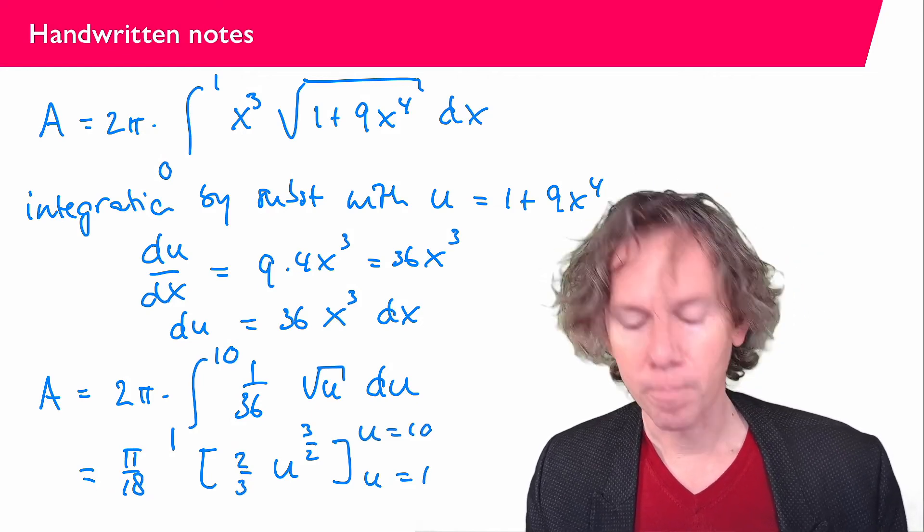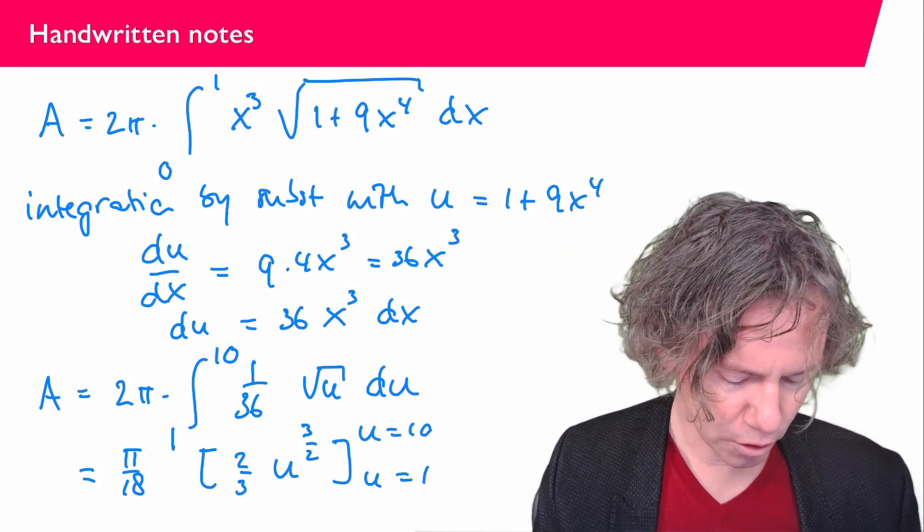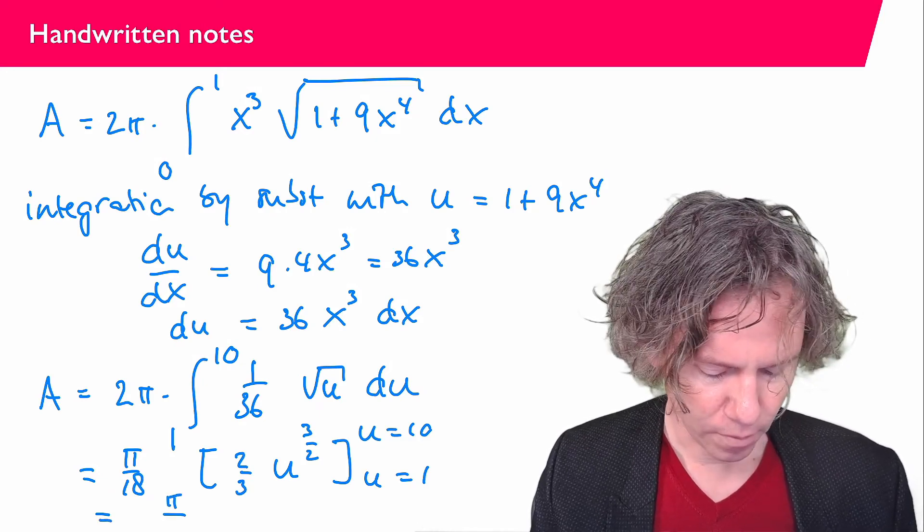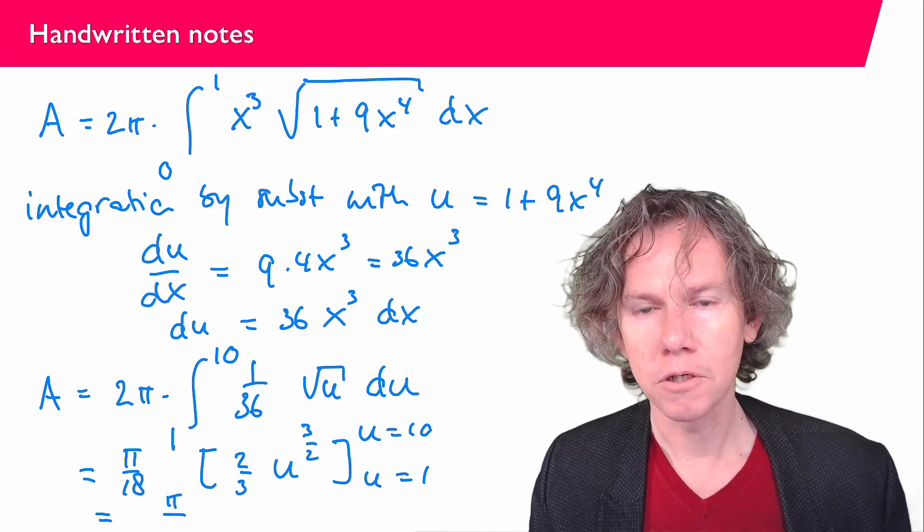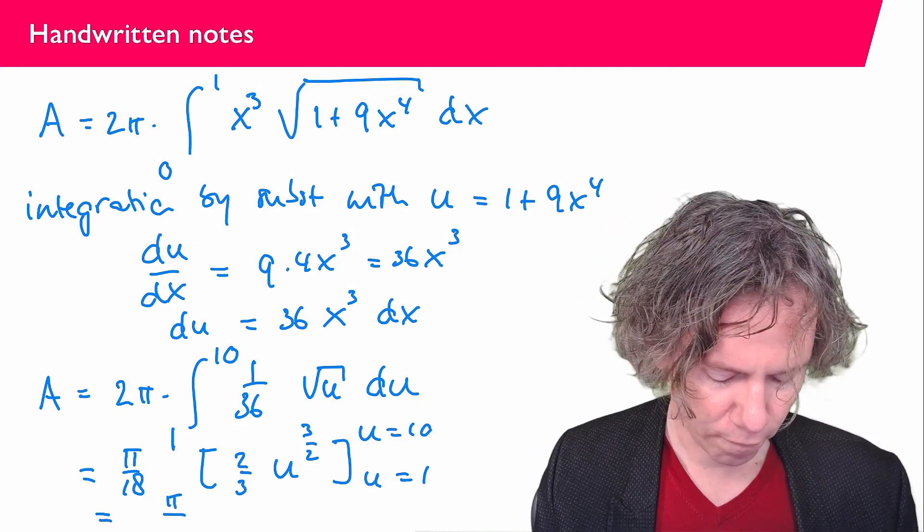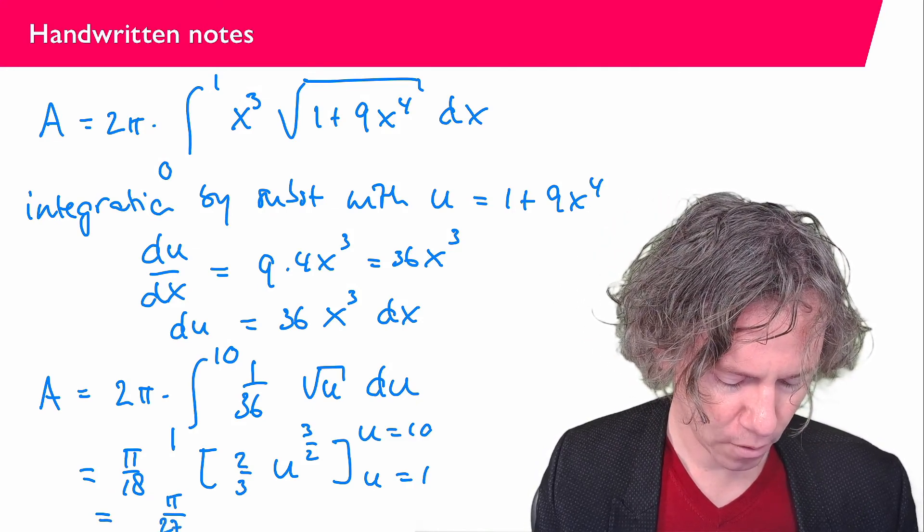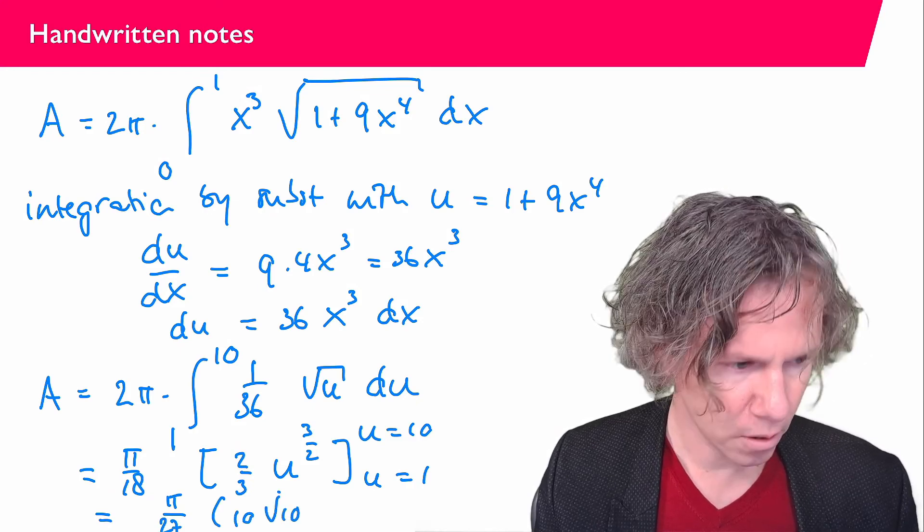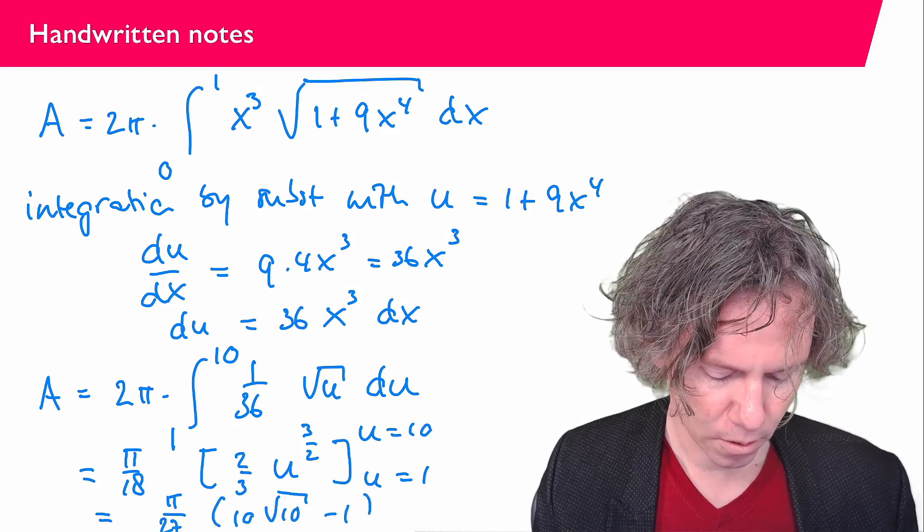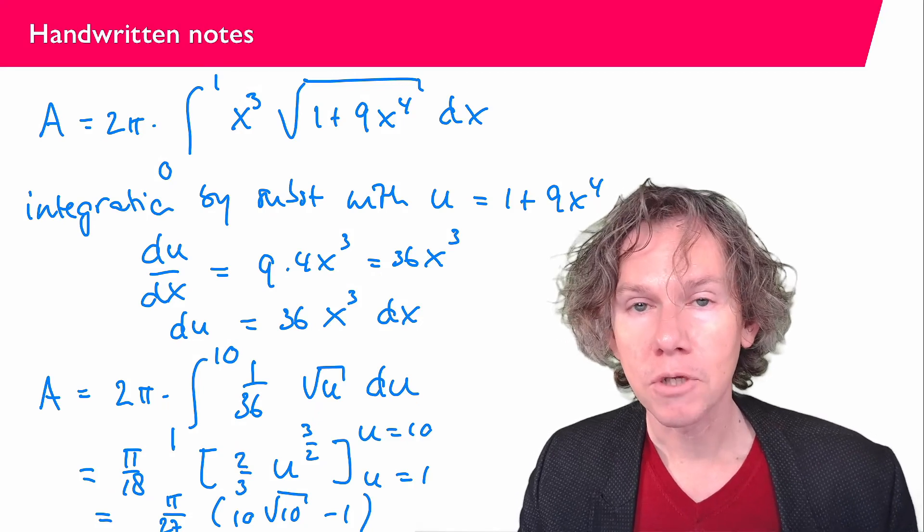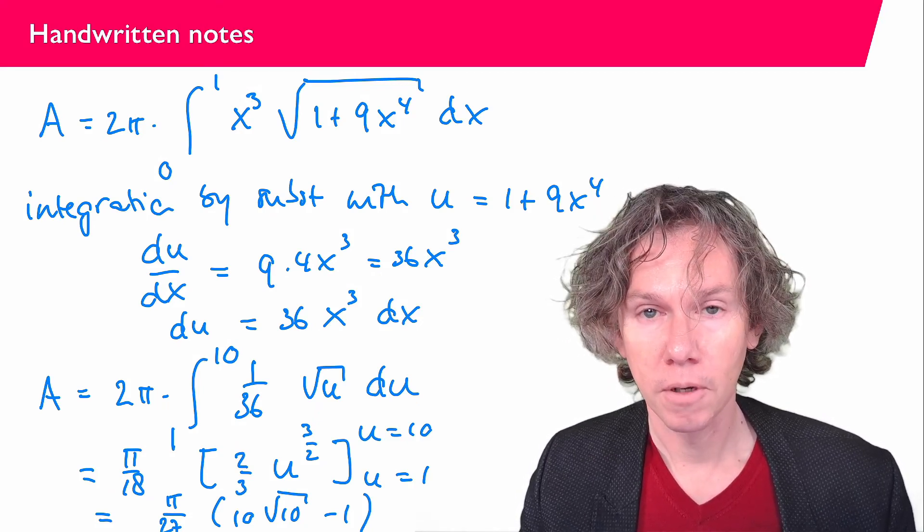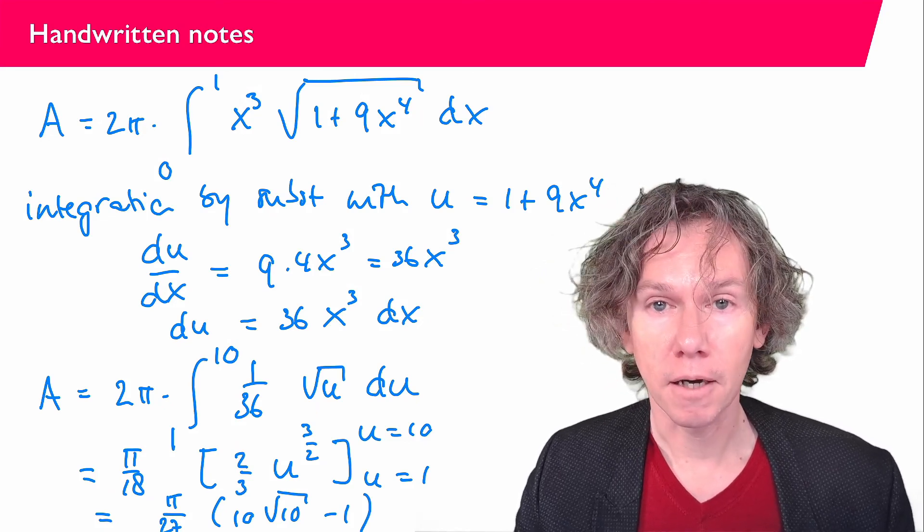And then finally if we plug in these values, you see that you get π over 27. So 2 over 3 times 1 over 18 becomes π over 27. And then we have 10 times the square root of 10 minus 1. So that is the answer. That is the surface of this trumpet-like shape. That concludes this video, and I will see you in the next one.